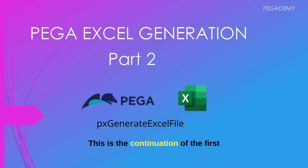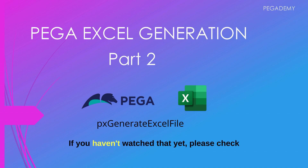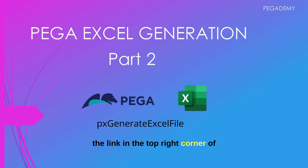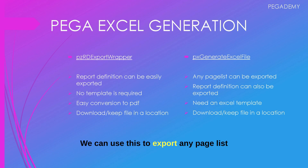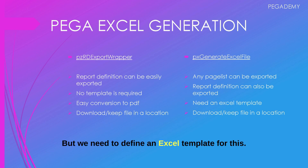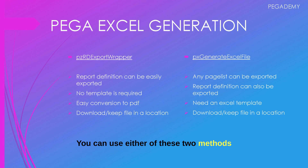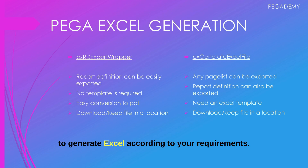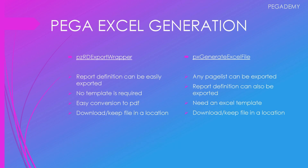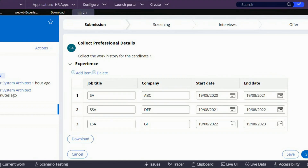This is the continuation of the first video of the Vega Excel generation. If you haven't watched that yet, please check the link in the top right corner of the video or the description details below. We can use this to export any page list from the report and report definitions as well, but we need to define an Excel template for this. You can use either of these two methods to generate Excel according to your requirements.